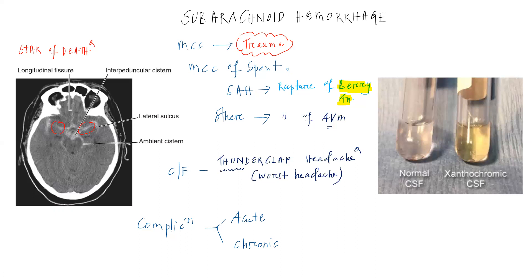Now acutely they can have vasospasm, usually three to ten days after the bleeding. This vasospasm can actually cause ischemic infarcts. So on top of subarachnoid hemorrhage, the patient can develop ischemic infarct because of this reactive vasospasm.